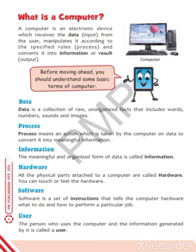Now we will learn what is a computer. Computer is an electronic device which works on the IPO cycle. What is the meaning of this IPO cycle? Input, Process, Output. We give instructions to the computer, it processes them and gives us output. Computer is an electronic device because it works with the help of electricity. It receives data — that means input — from the user, manipulates it according to specific rules — that means process — and converts it to a result — that is our output. So the computer works on the cycle: IPO.